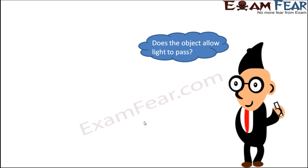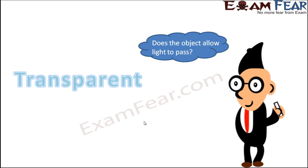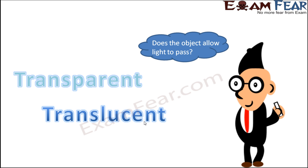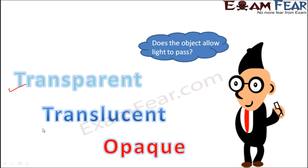These three behaviors which we saw — in one, an image is formed; in another, a shadow is formed; and in the third, it allows you to see through that object. This is because some objects allow light to pass through them, some objects do not allow light to pass through them, whereas some other objects partially allow light to pass through them. So based on how objects allow light to pass through them, they have been classified into three types: transparent, translucent, and opaque objects.